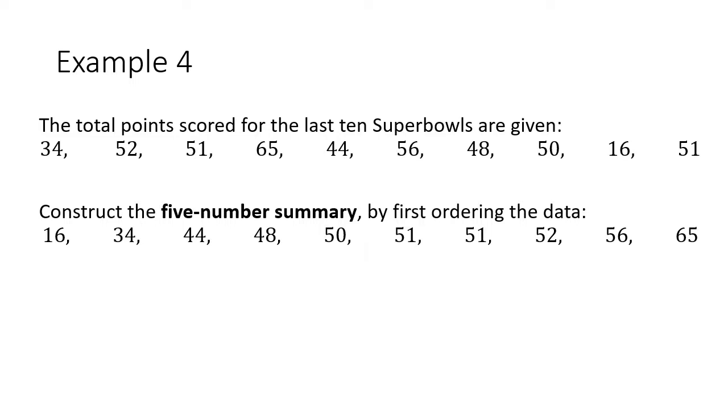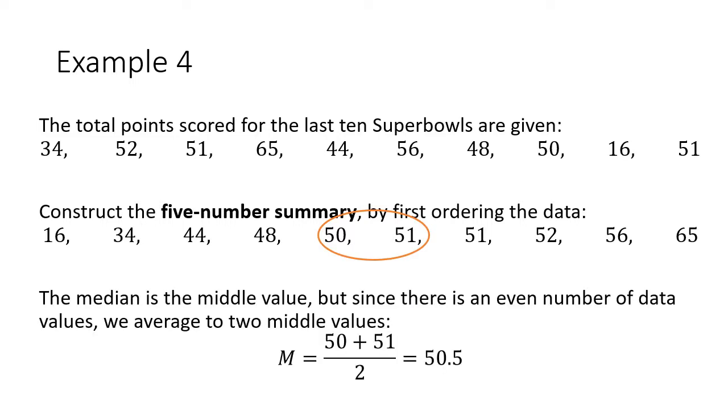I want to find my median. That means I need my middle number. Except, in this case, there's two middle numbers. There's no one value just exactly in the middle. I mentioned this in the last video that when this happens, our median ends up being the average of these two. When I average 50 and 51, the average of 50 and 51 is 50.5. So, my median ends up being 50.5.